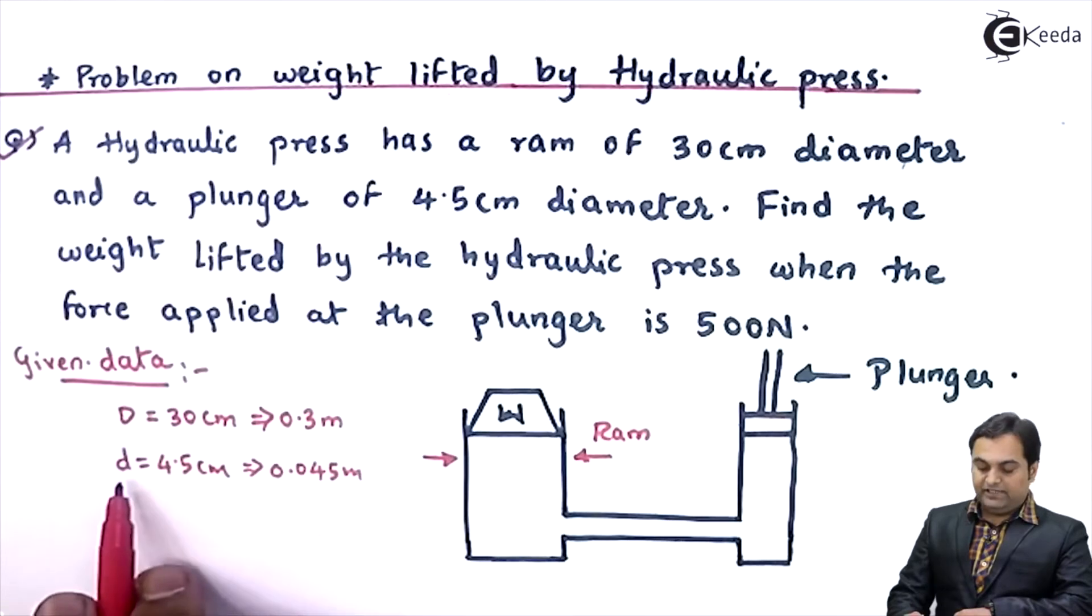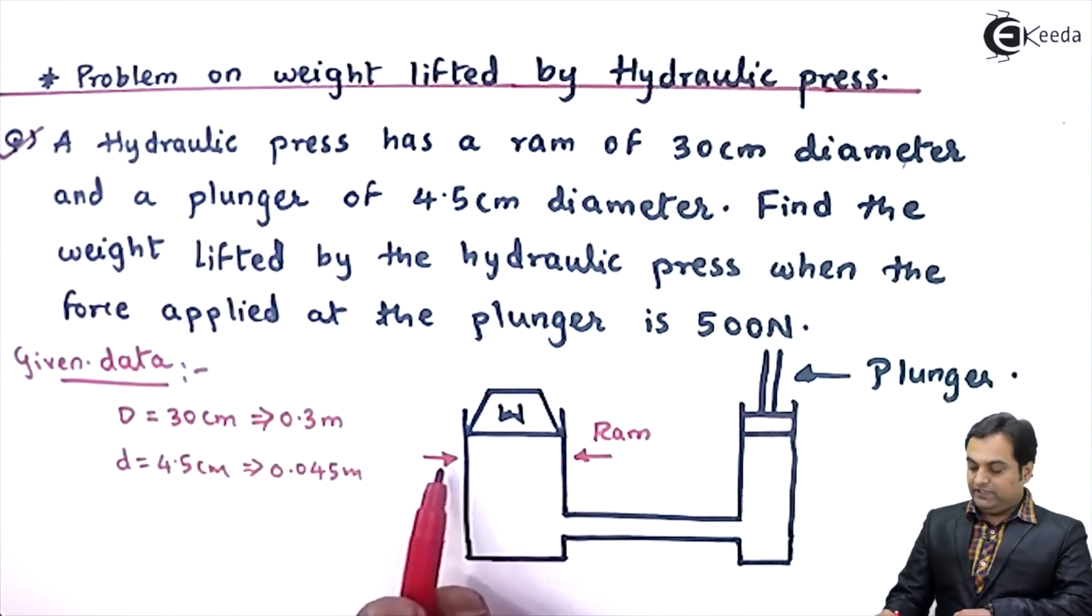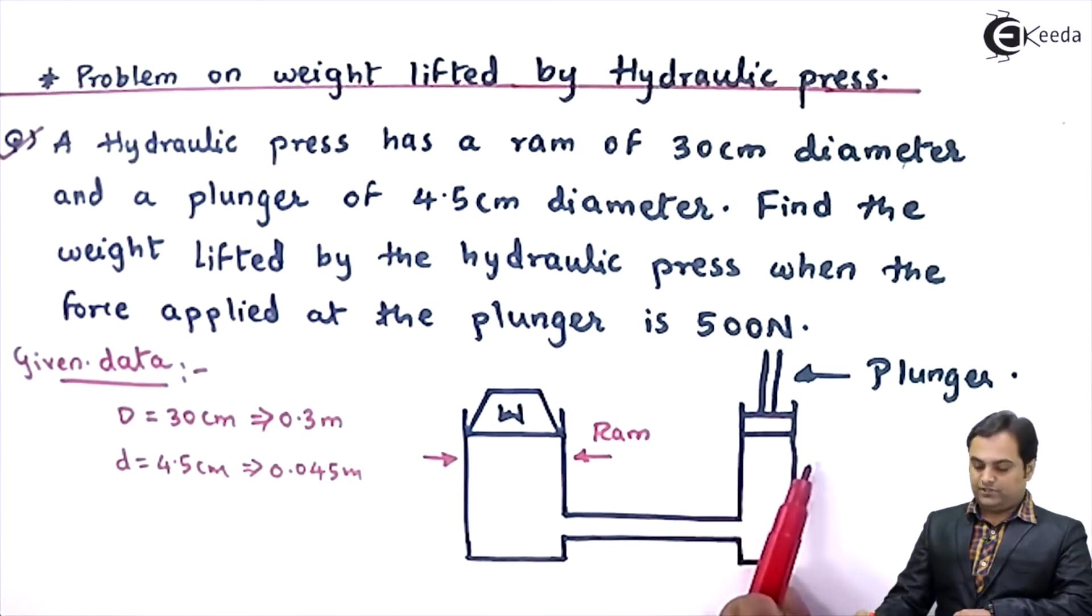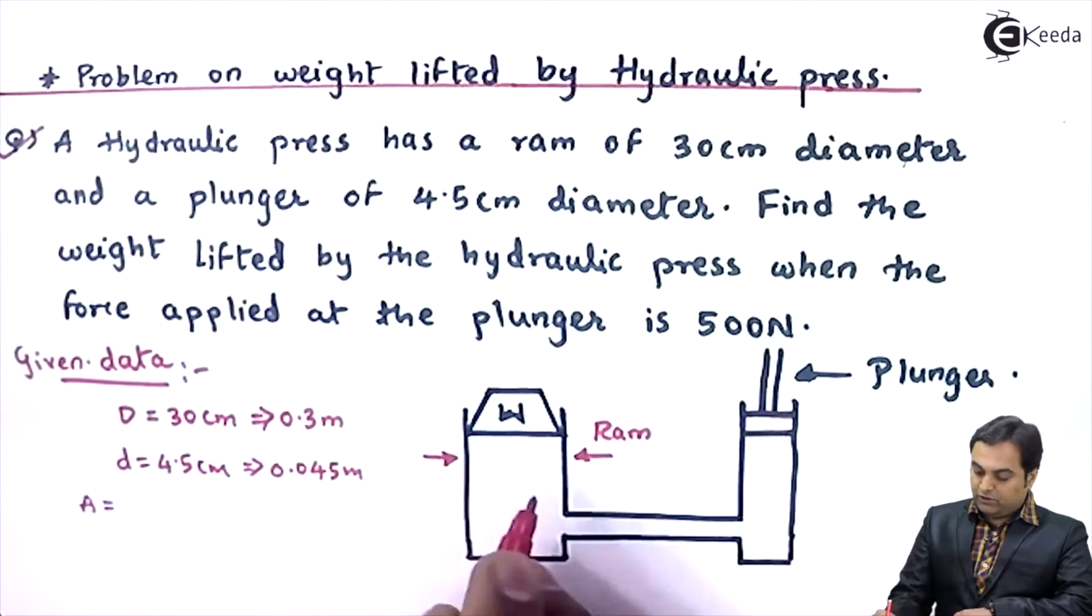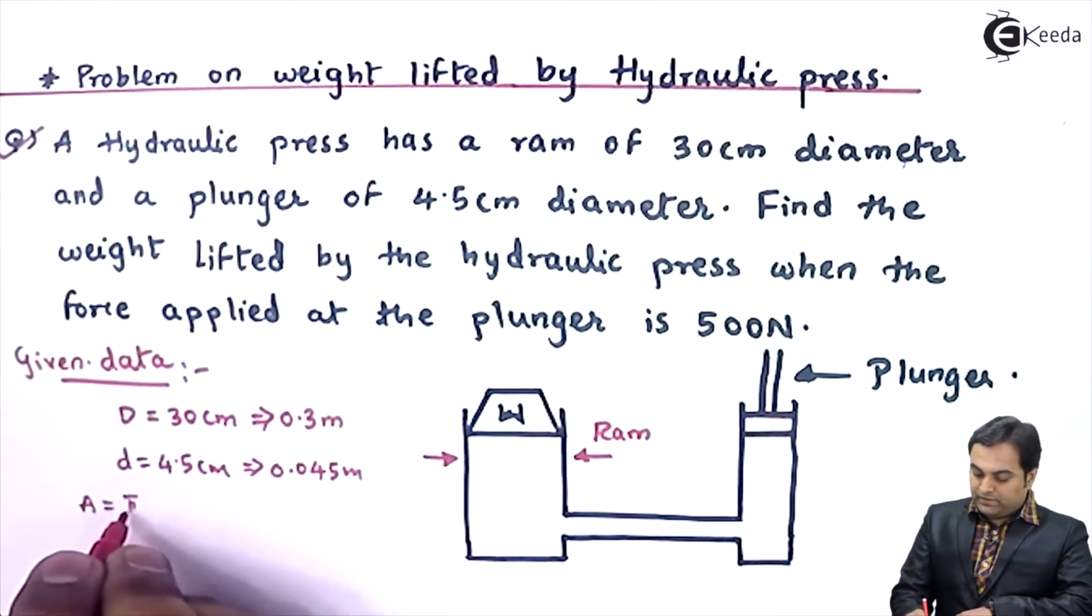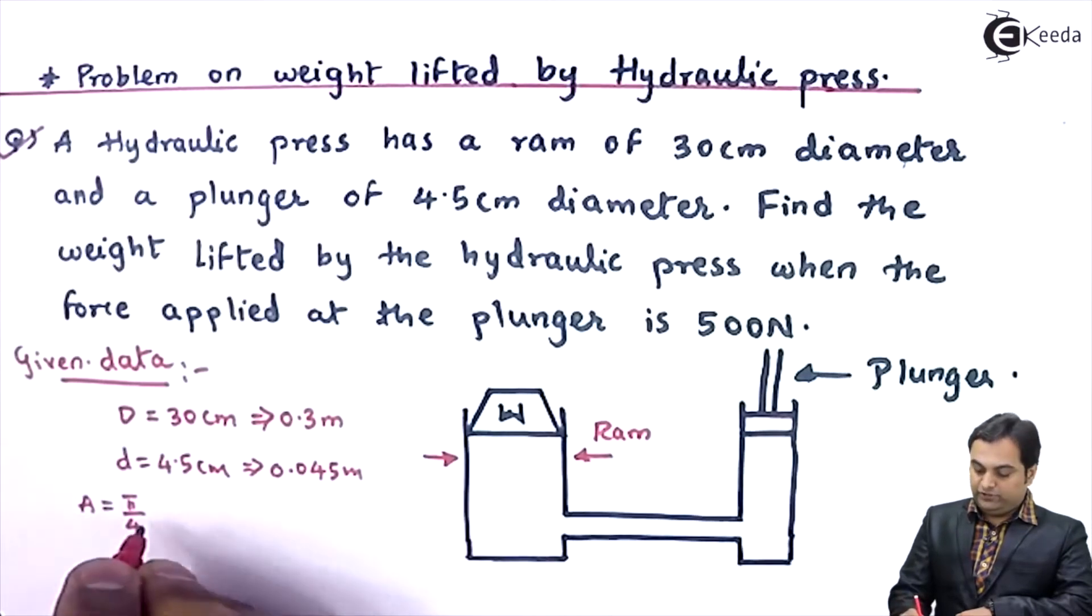Now, once we have capital D and small d, we can calculate area of RAM and area of plunger. So I'll denote capital A as the area of RAM.